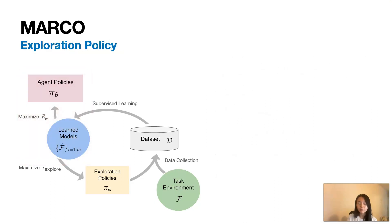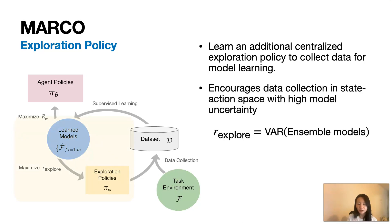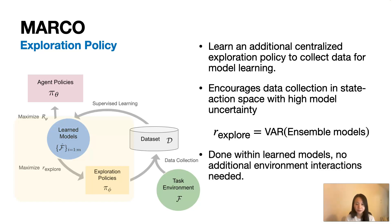To further improve sample complexity, Marco learns separate exploration policies to collect data in state-action space with high model uncertainty. This model uncertainty is quantified as the variance over the ensemble of models we learn, and is used as an exploration bonus for the exploration policies. The exploration policies are also centralized by conditioning on the central state. This allows the exploration policy to more quickly return to the frontier of state-action space with high model uncertainty, which can further improve sample complexity. The exploration policies are also optimized within the learned models, so no additional environment interaction is needed.